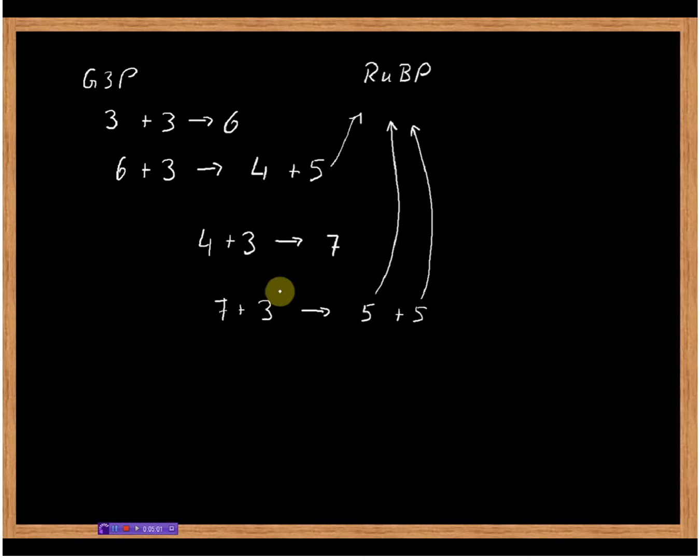So what have we used? We've used one, two, three, four, five molecules of this G3P—so five times G3P—and this gives us in these reactions three times ribulose bisphosphate. Of course we need some energy, we need ATP for that,